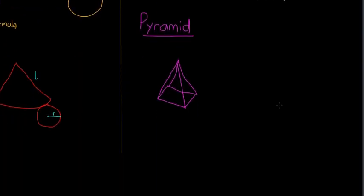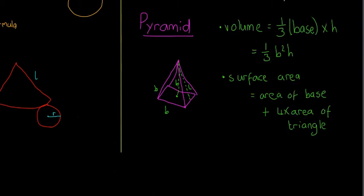The last shape is the pyramid. Key measurements are the base, the height h going to the middle, and l along the face of a triangle — l is a bit longer than h. The volume is one-third multiplied by the base area by the height. The base can be any shape — for a square base, it's one-third B squared times h, because the base area is B times B.